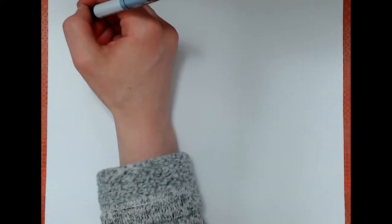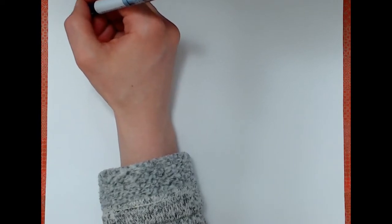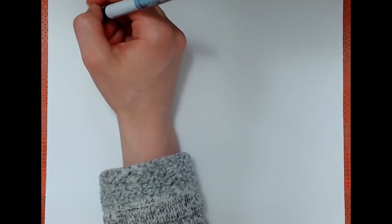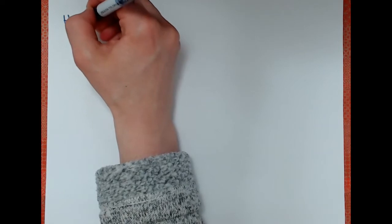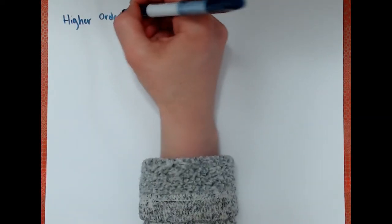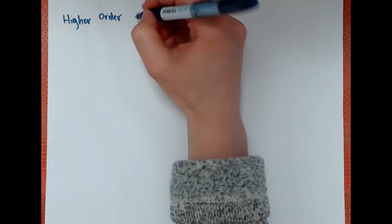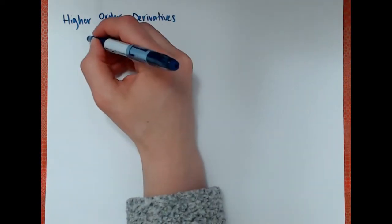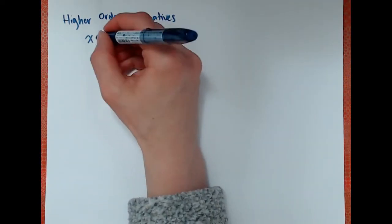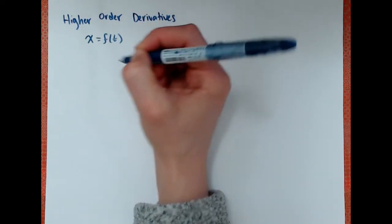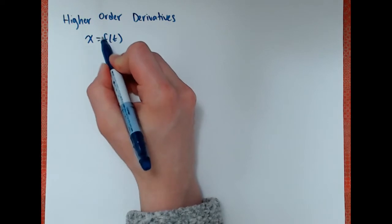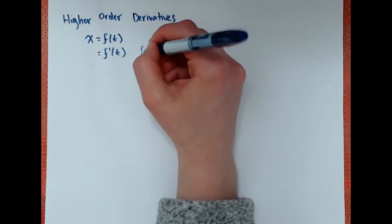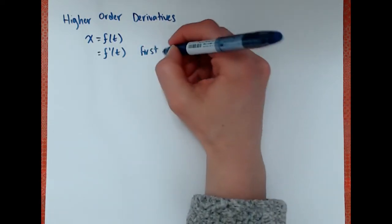In this video we're going to cover higher order derivatives and implicit derivatives. Higher order derivatives don't change the technique — it just means you might take the derivative more than once. For example, if you have a distance x as a function of time, taking the derivative gives you f prime of t, which is the first order derivative.